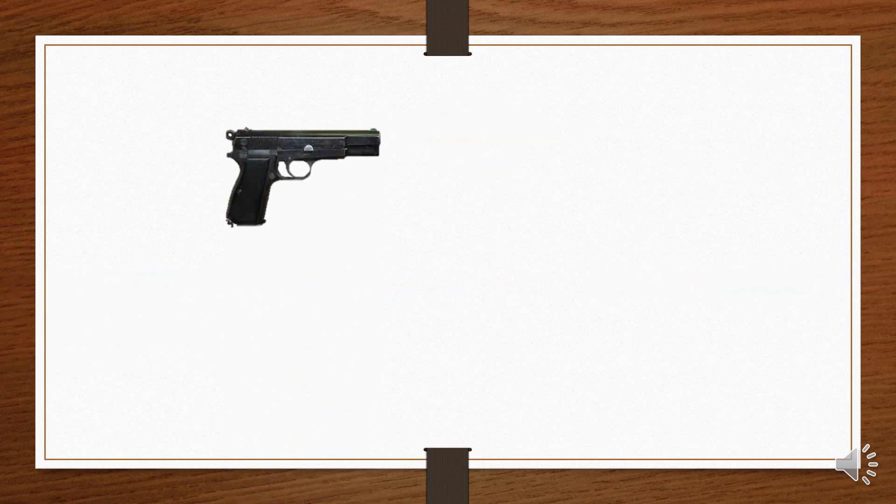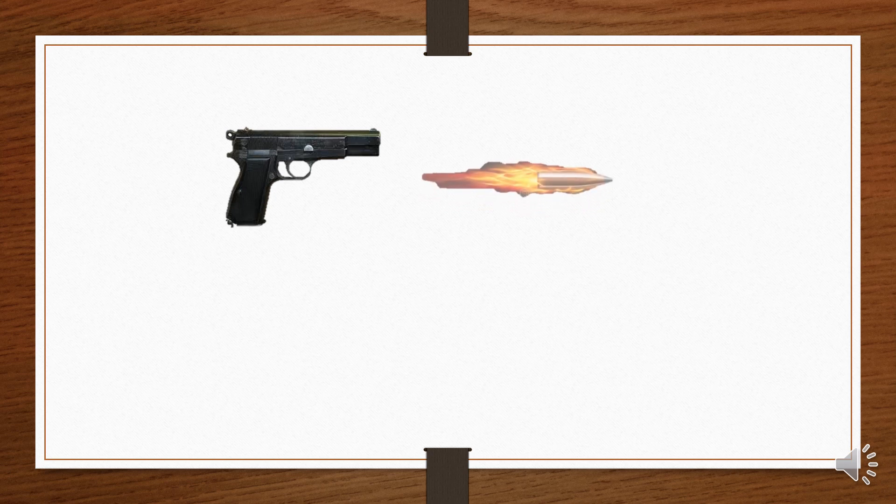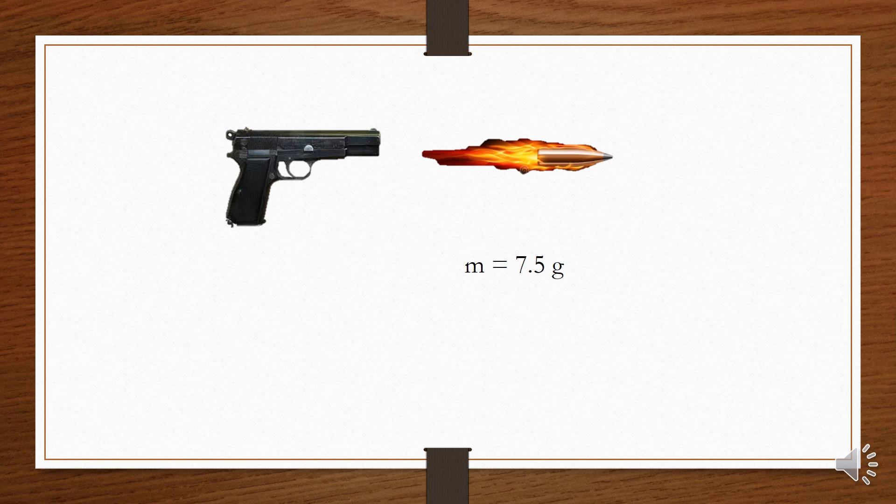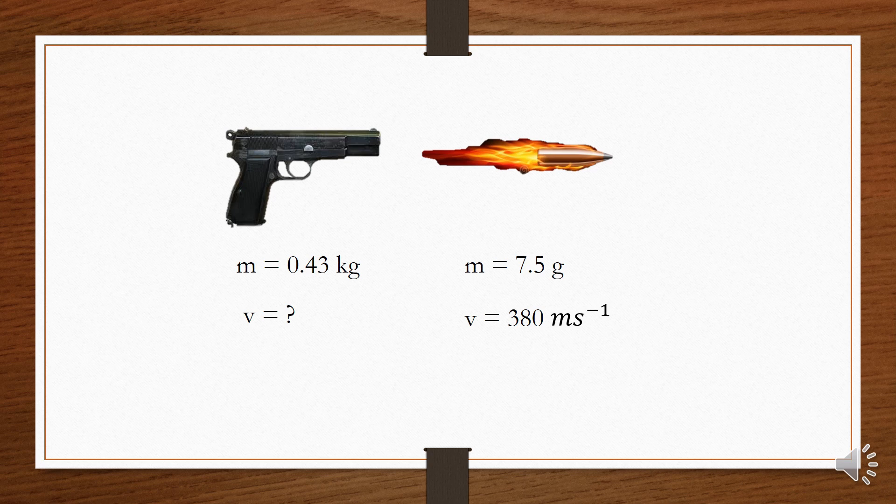Let's put some data to understand this. The mass of the bullet is only 7.5 grams and its velocity is 380 meters per second. While the pistol here has a mass of 0.43 kilograms. With this information, we can calculate how fast this pistol recoils when it's fired.